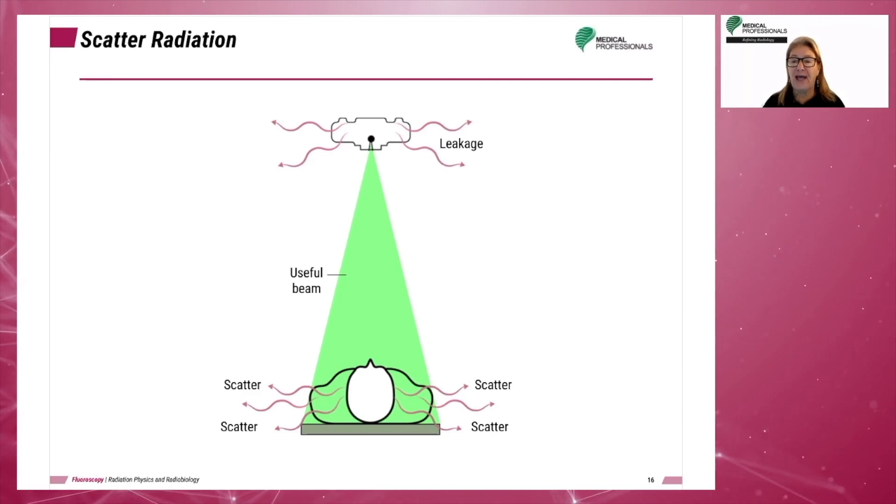Compton scatter is the product of an interaction of the x-ray photon with an inner shell electron. The interaction results in an ejected, scattered electron and the loss of some of the energy of the incoming or incident x-ray photon to the atom. The scattered x-ray photon will have less energy than the incoming x-ray photon.